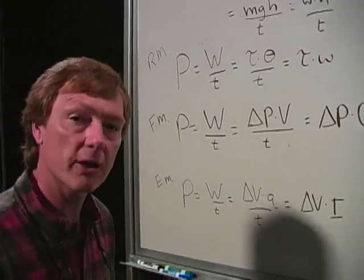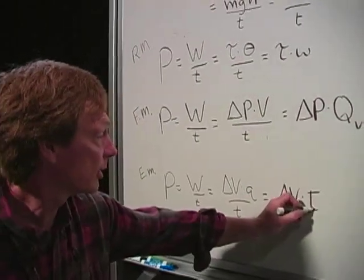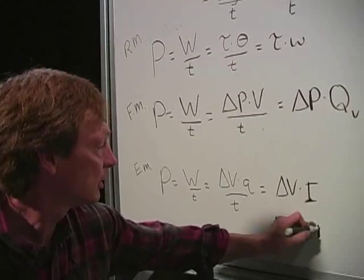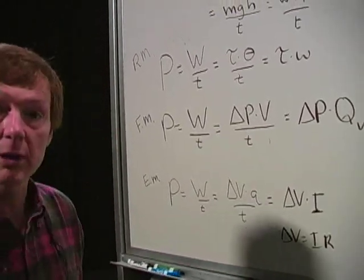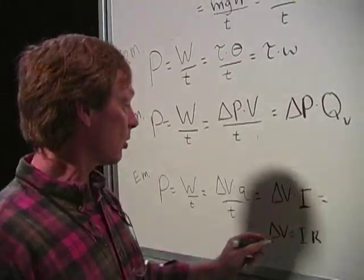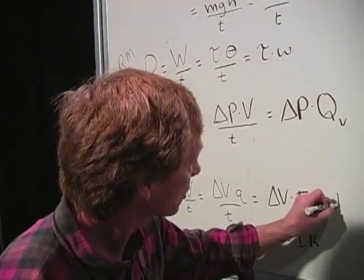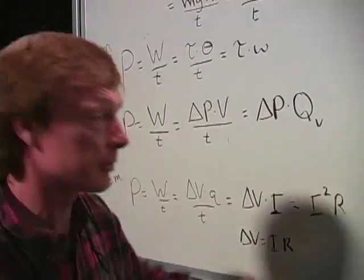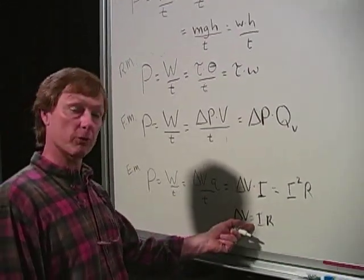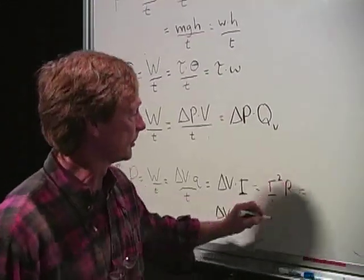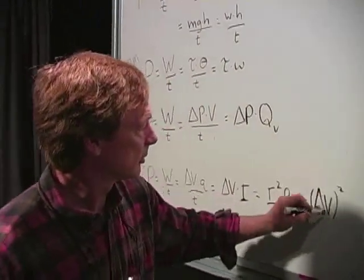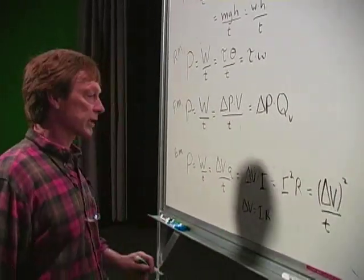Now, Ohm's law says that I can restate this in a few ways. I've got voltage is current times resistance. So if I want to replace the voltage in this equation, I can say power is voltage times current, or it's current squared times the resistance. Or I can take out the current with this equation, with Ohm's law. And I can say it's voltage squared over resistance.